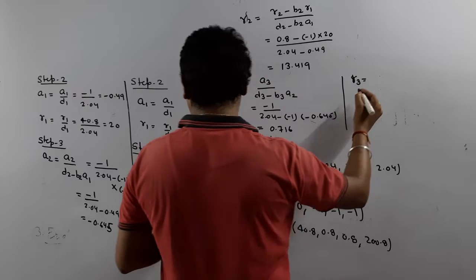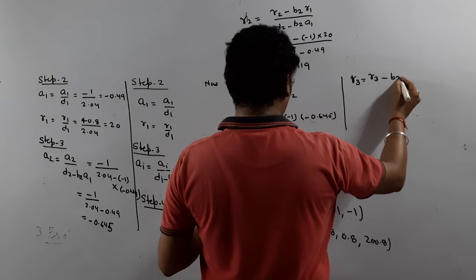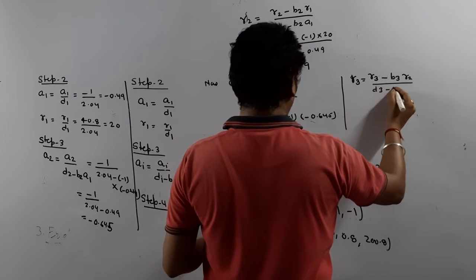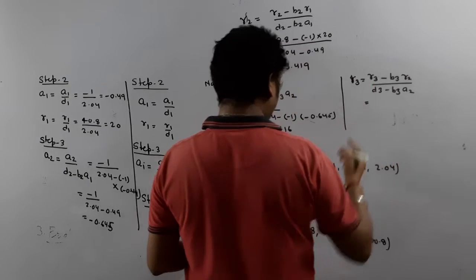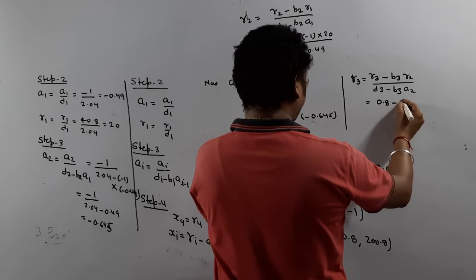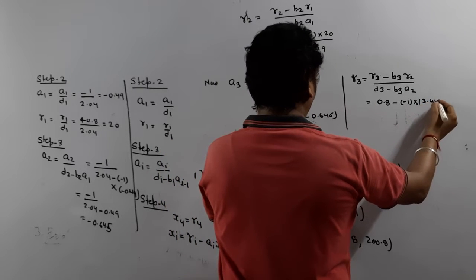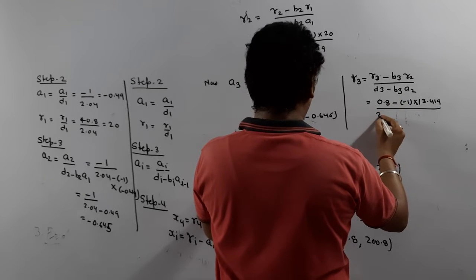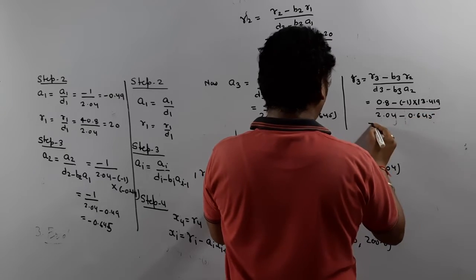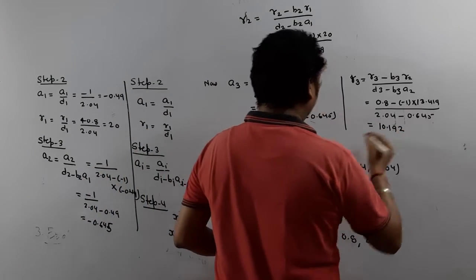Now calculate R3. Using the formula with i = 3: R3 = (R3 − B3 × R2) / (D3 − B3 × A2). R3 = 0.8, B3 = −1, R2 improved = 13.419, D3 = 2.04, A2 improved = −0.645. So R3 = (0.8 − (−1)(13.419)) / (2.04 − (−1)(−0.645)) = (0.8 + 13.419) / (2.04 − 0.645). When you simplify, R3 = 10.192.